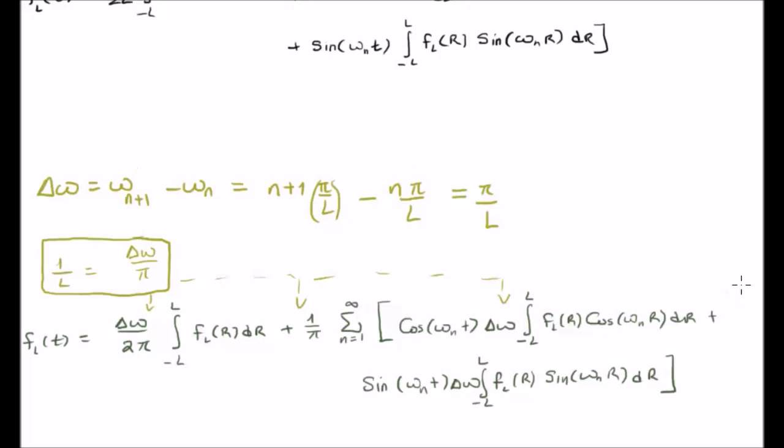We still have, of course, these kind of transforming integrals here and here. They are still there. So there is a transform of some description occurring. We are integrating on minus l to l, which is the period. But the important point to note here is that we now have this delta omega.